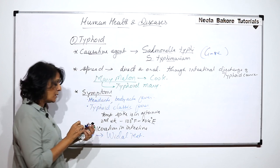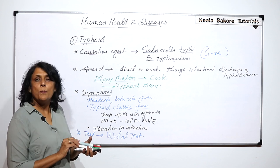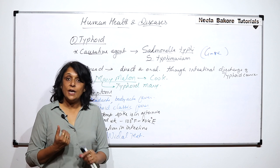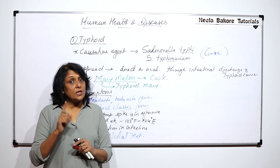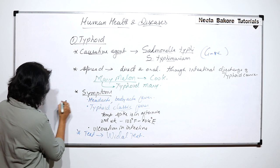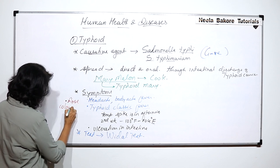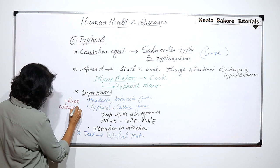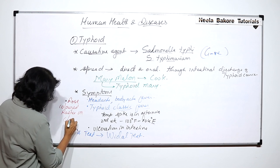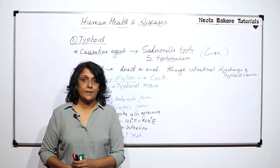There is one more symptom in case of typhoid, and that is pink or rose-colored rash. It appears especially on the chest region. This rose-colored rash on the chest is unique to typhoid.